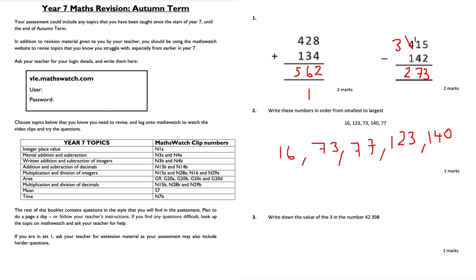Question 3: write down the value of the digit 3 in 42,398. The value of 3 is 300 — it sits in the hundreds column, so it's 3 lots of 100, which equals 300.